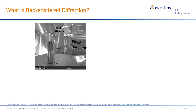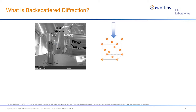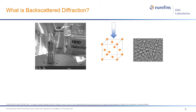Moving on to the backscatter diffraction background. This is a typical image of our tool running an EBSD test. You can see the stub with a small chip sample on top. The SEM pole piece delivers electrons from above, and on the right we have the EBSD detector inserted when the sample is ready. The sample is tilted 70 degrees relative to the normal horizontal position. The electron beam comes down from the pole piece and interacts with the crystal lattice, and the diffracted electrons are collected on the EBSD detector screen.